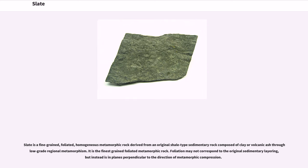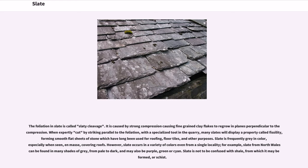Slate is a fine-grained, foliated, homogeneous metamorphic rock derived from an original shale-type sedimentary rock composed of clay or volcanic ash through low-grade regional metamorphism. It is the finest-grained foliated metamorphic rock. Foliation may not correspond to the original sedimentary layering, but instead is in planes perpendicular to the direction of metamorphic compression. The foliation in slate is called slaty cleavage, caused by strong compression causing fine-grained clay flakes to regrow in planes perpendicular to the compression.